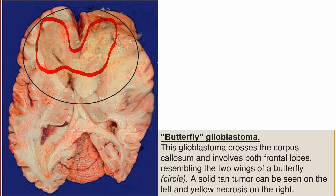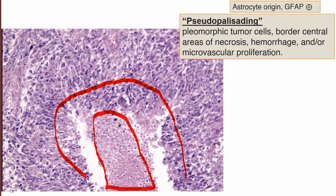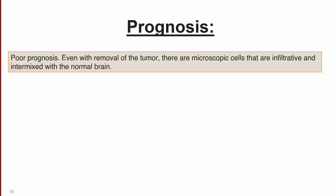On microscopy, glioblastoma multiforme shows pseudopalisading structure: a central area of necrosis lined by viable tumor cells, with possible microvascular proliferation. These viable cells line the central areas of necrosis and hemorrhage. This pseudopalisading pattern is a very high-yield microscopic finding for glioblastoma multiforme.